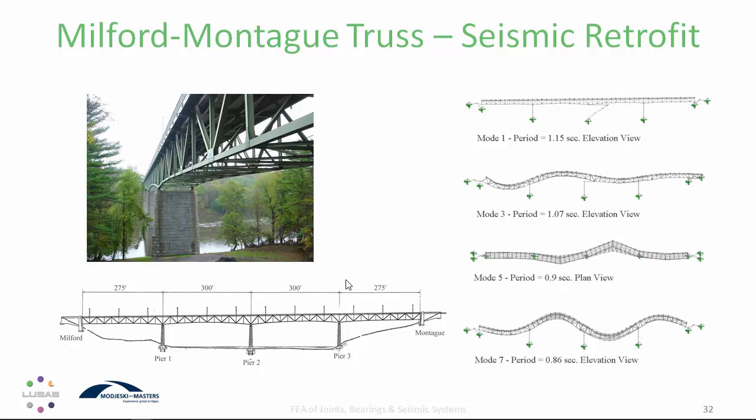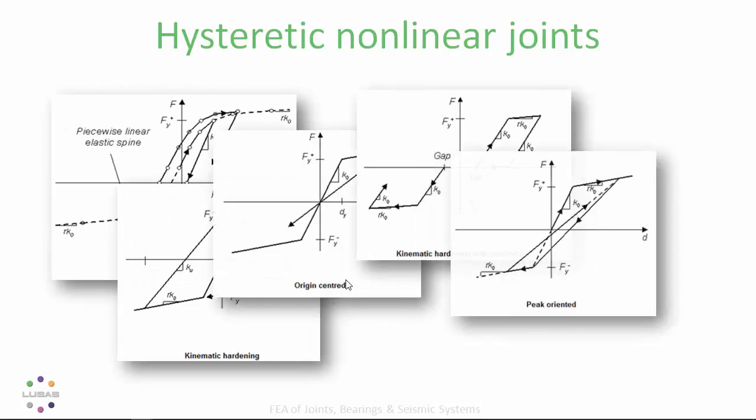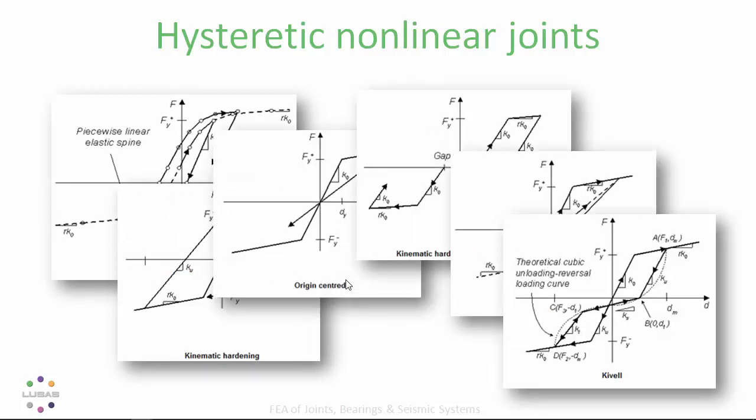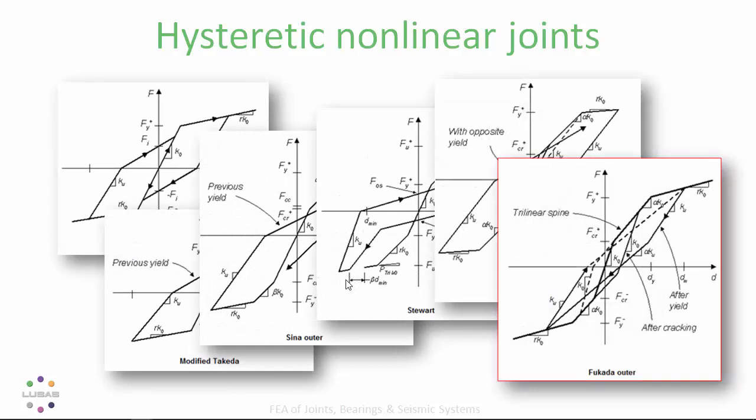In general, global analyses often include joint elements to model the behaviour of specific bearings or damping devices. Joint elements have been developed to represent all kinds of device or structural arrangement for pushover analysis, large displacement analysis, and transient analysis. These are invariably hysteretic and can represent, for example, the behaviour of structural connections in reinforced concrete, steel, and timber. A wide range of joint types is available in LUCIS, including the Fukada degrading trilinear hysteresis for modelling plastic hinges in reinforced concrete beams, which changes stiffness at cracking and yielding points.